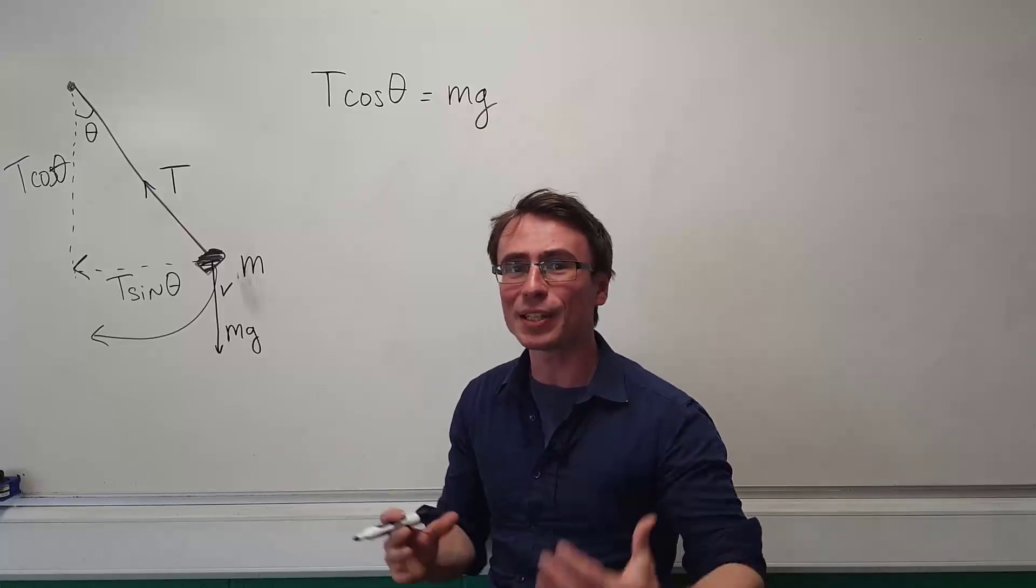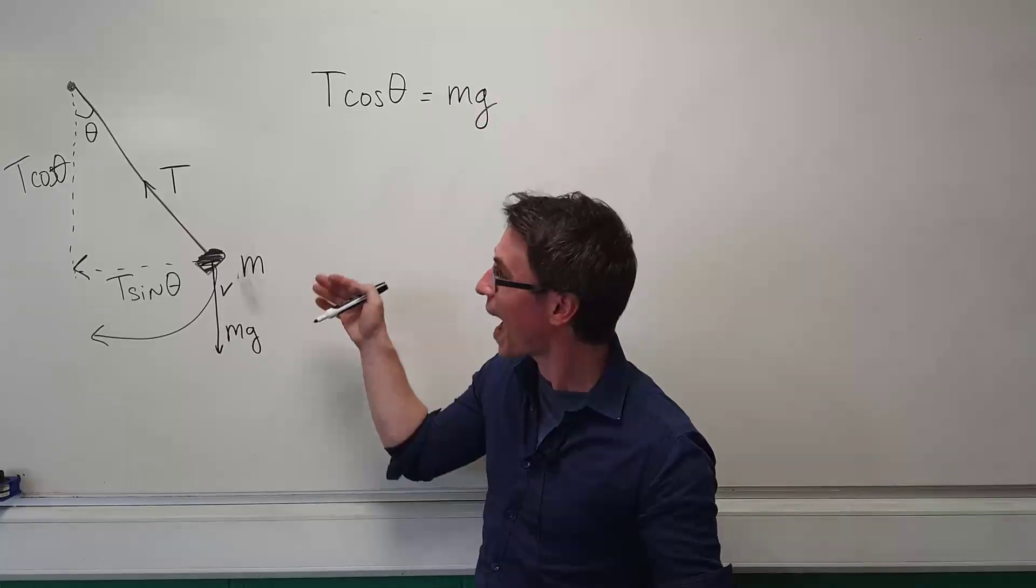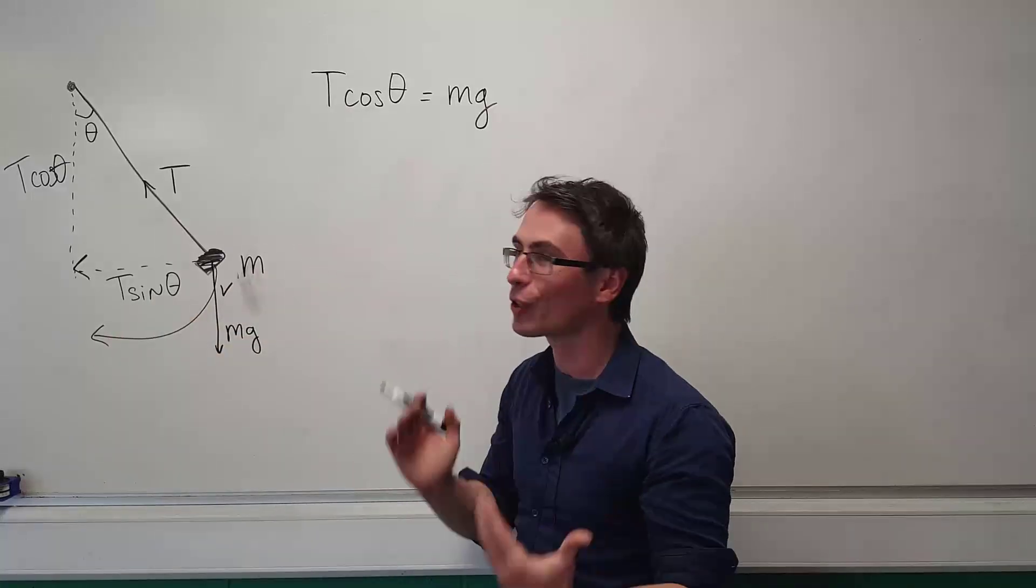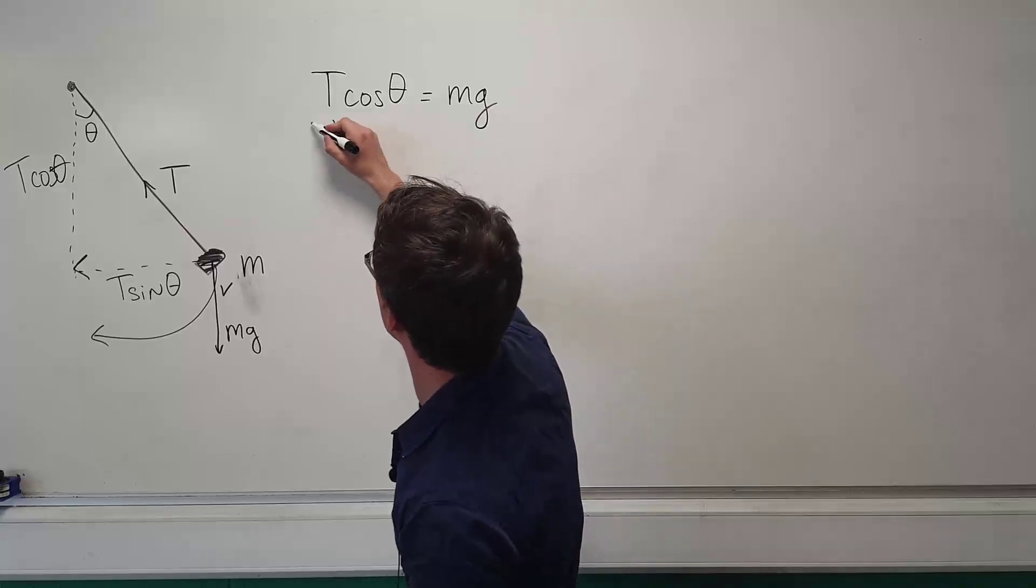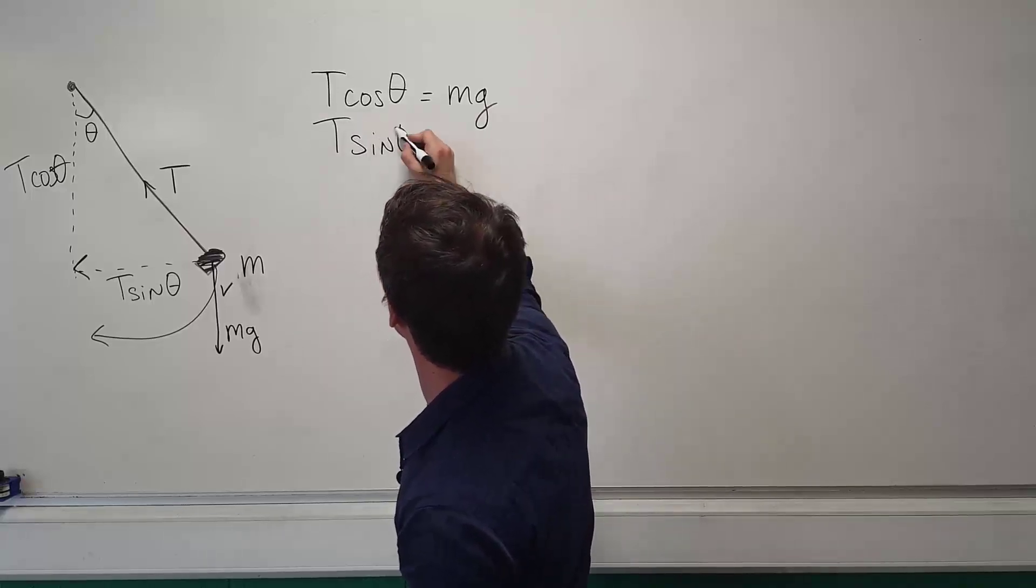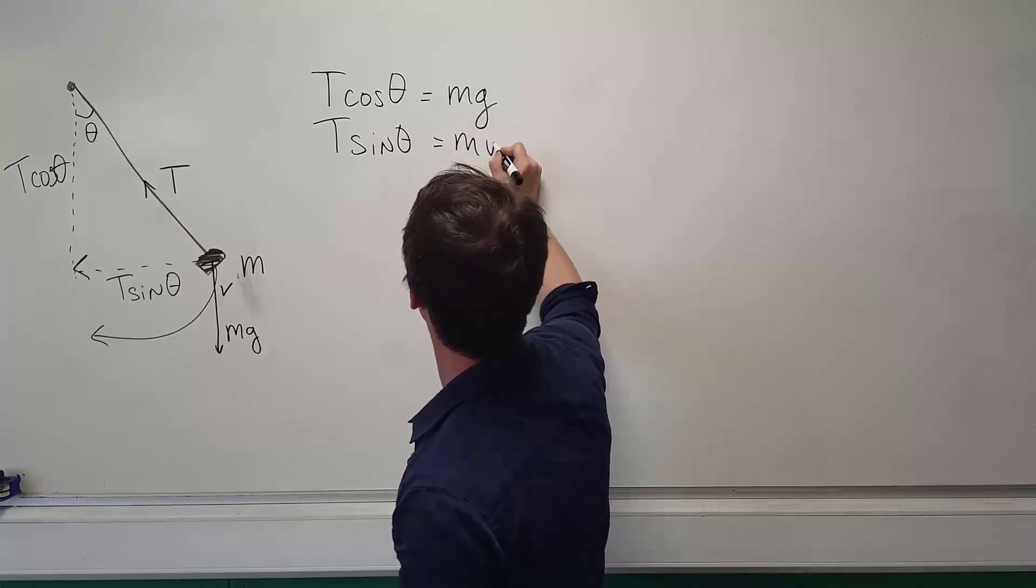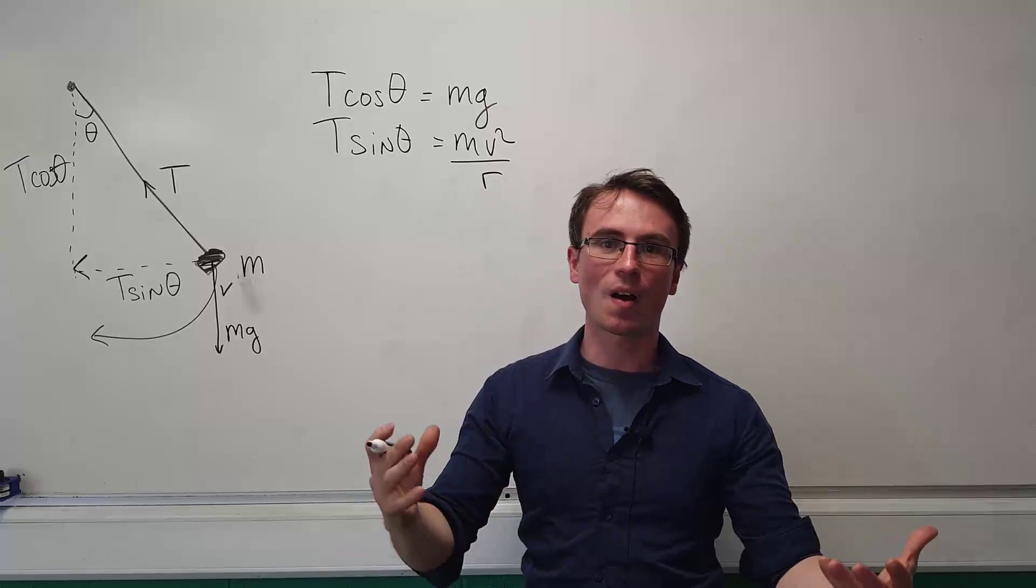Because the object is spinning there needs to be a net centripetal force acting towards the center of rotation, and this will be provided by the horizontal component of the tension. In other words, T sine theta is going to equal mv squared divided by r.